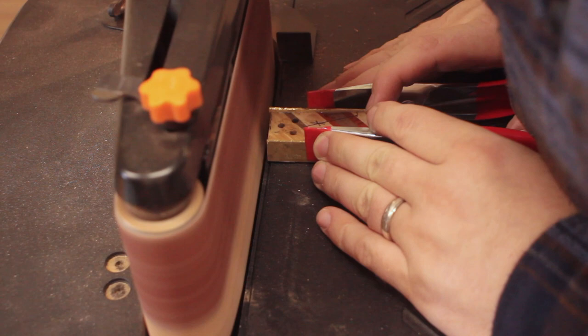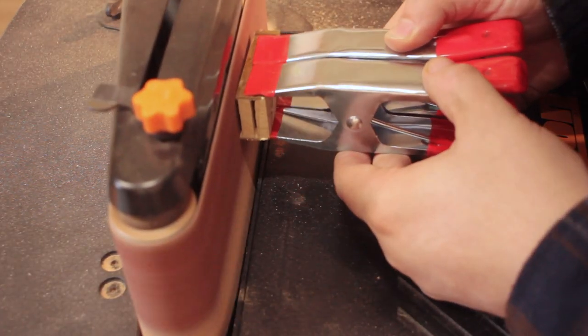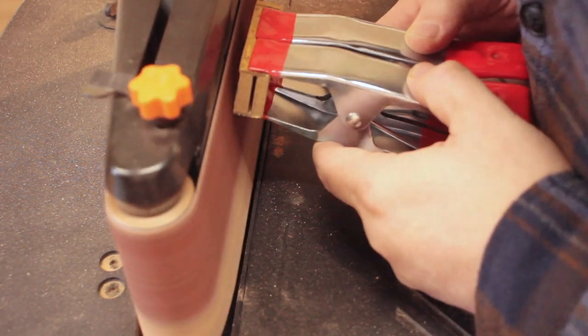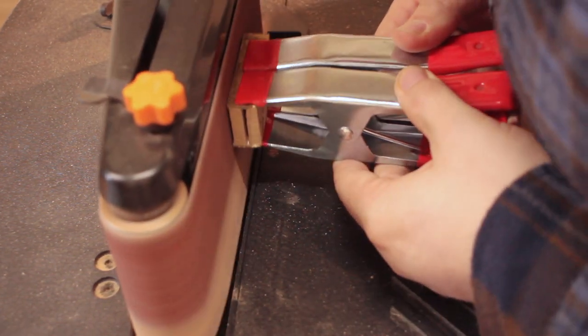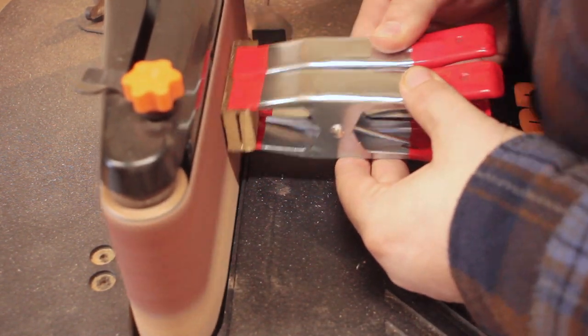I took it back over to the Triton belt sander just to square everything off and it was getting really hot, so I did end up using these clamps. But it took the majority of it off that I needed and got it nice and flush with the rest of the wood - cleaned it up really nicely in the end.